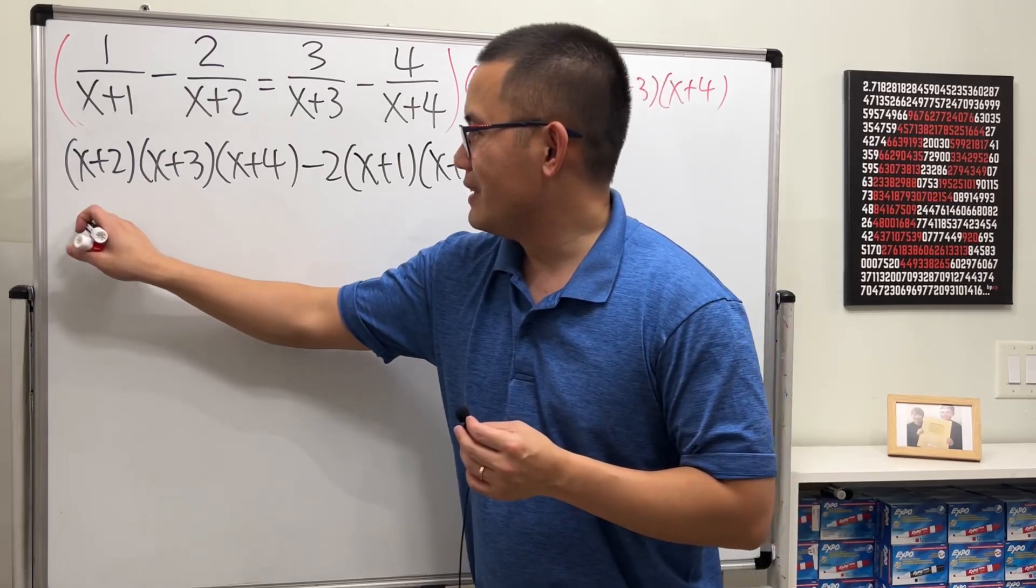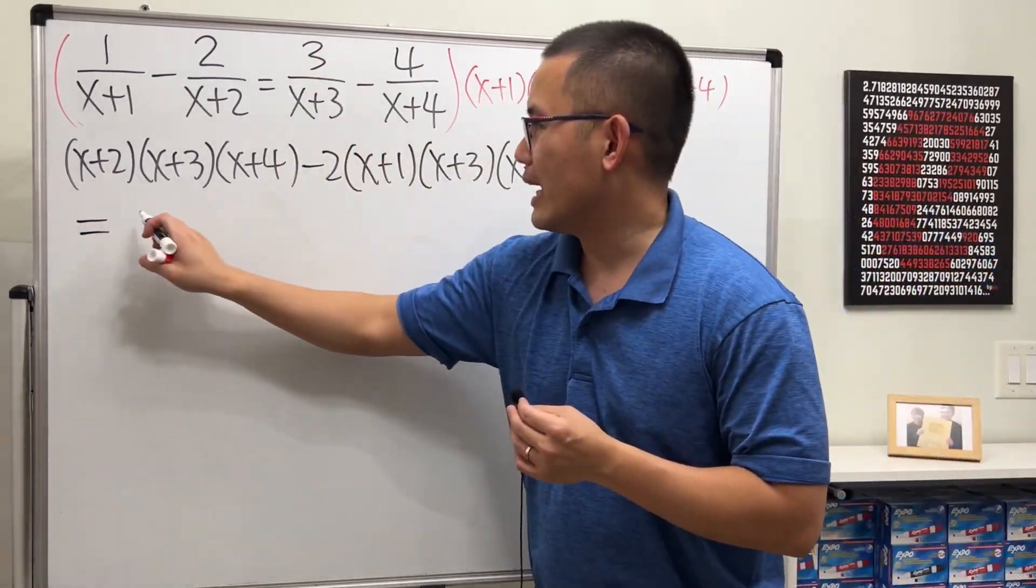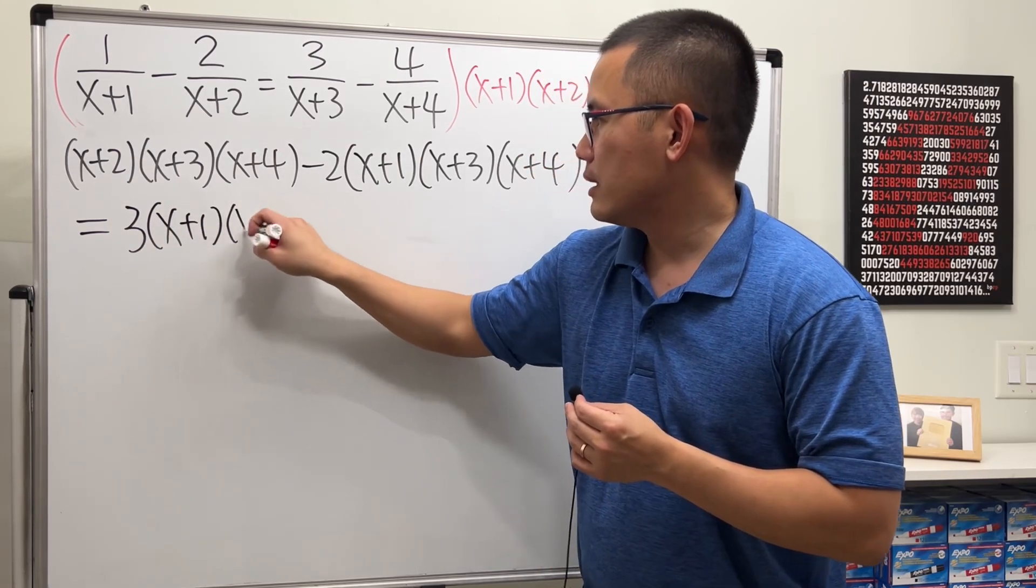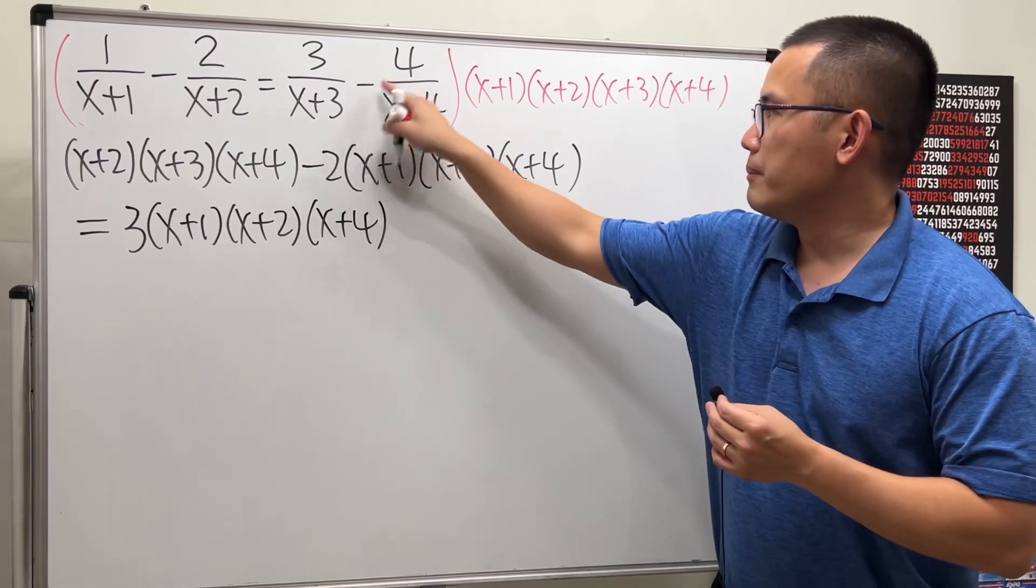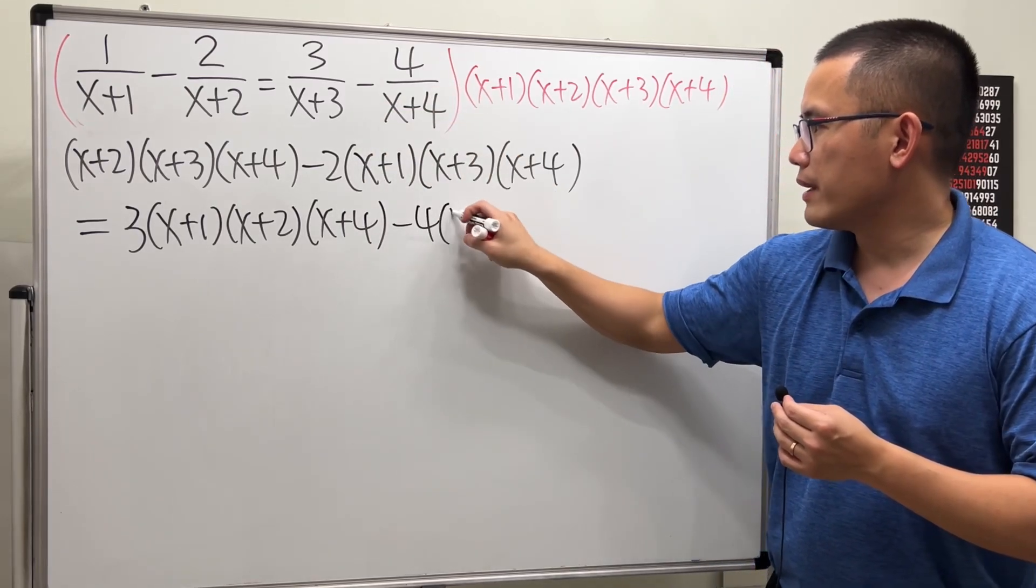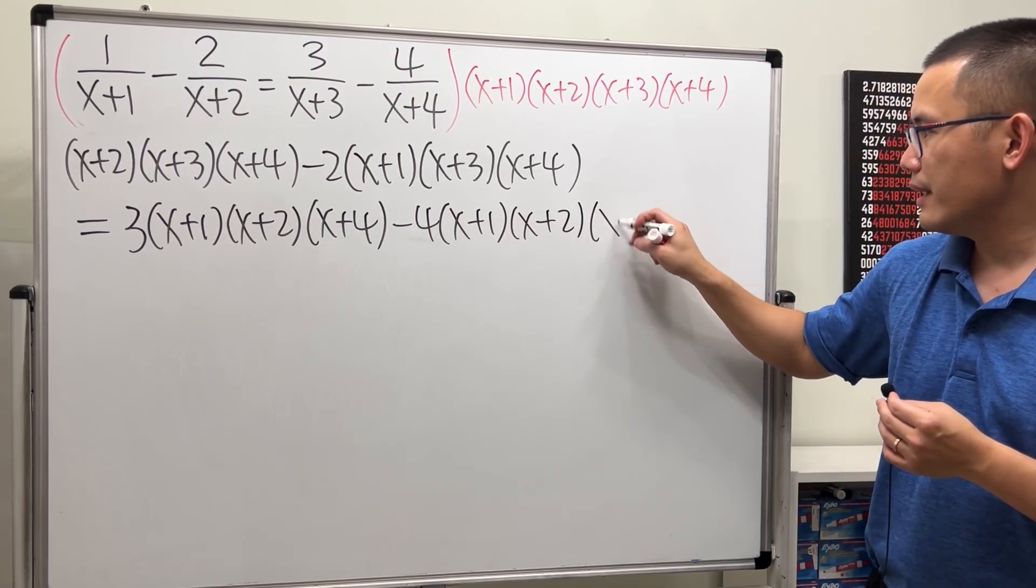And then this will be equal to, this times that, the x plus 3 cancels, so we have 3 and then x plus 1, x plus 2, x plus 4. And then the last one is minus 4, x plus 1, x plus 2, x plus 3.